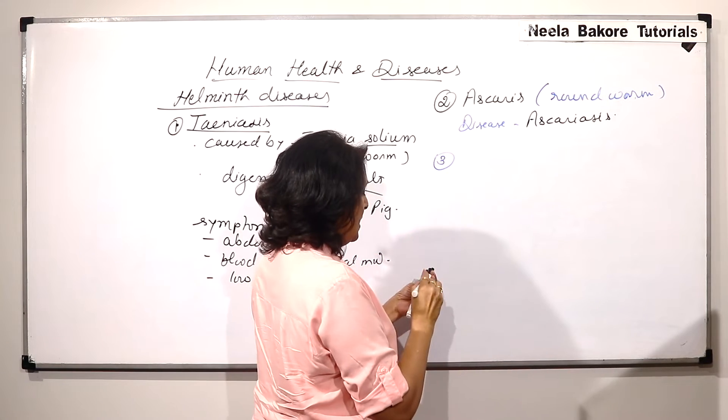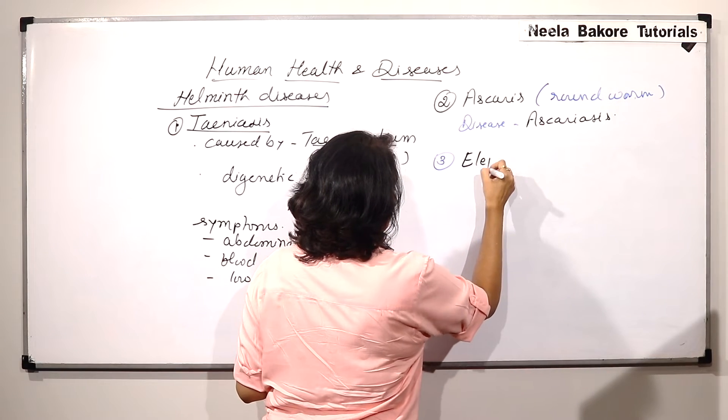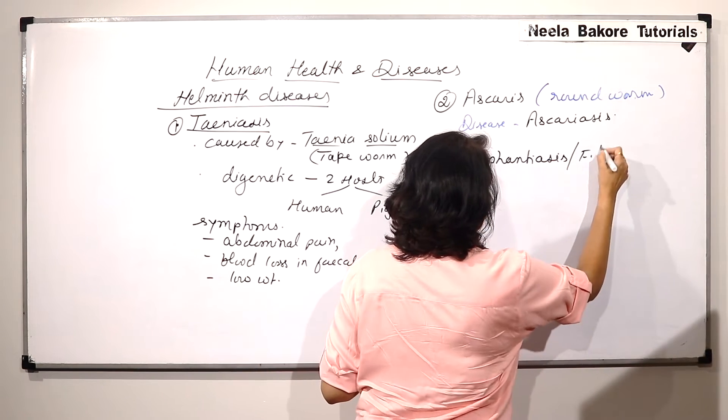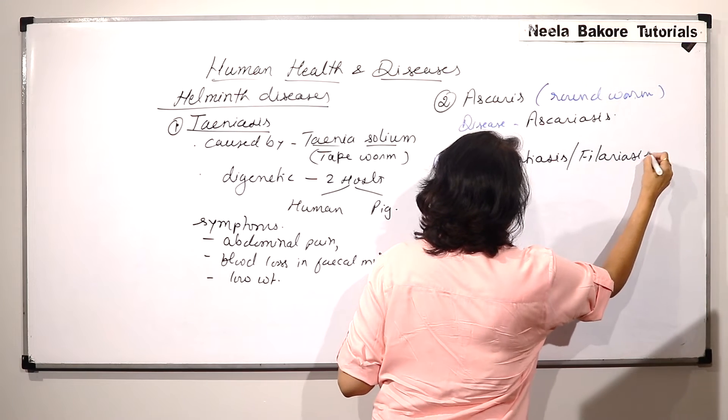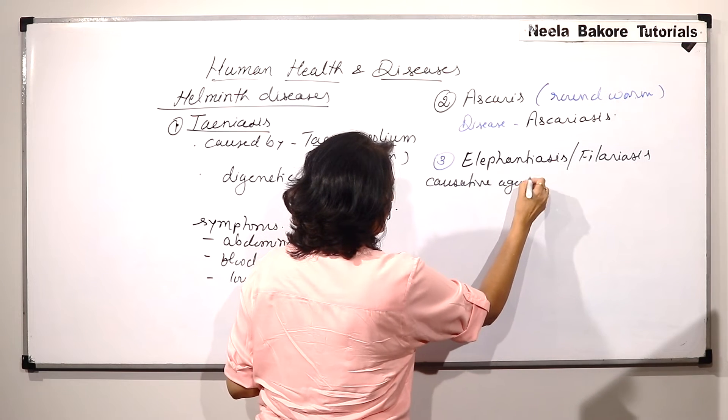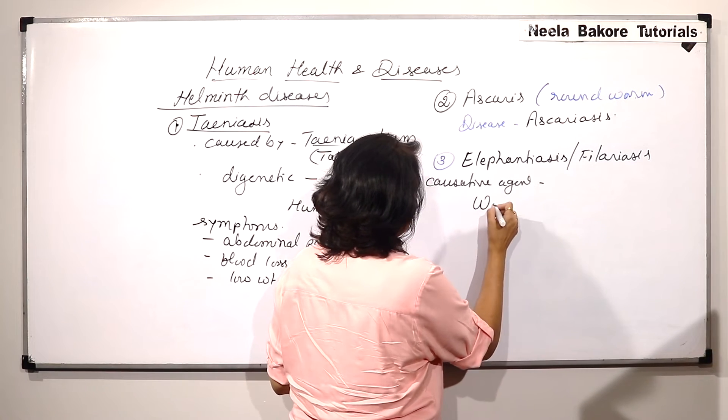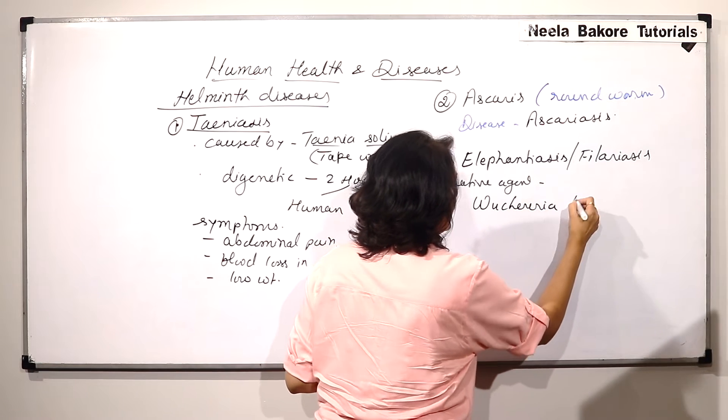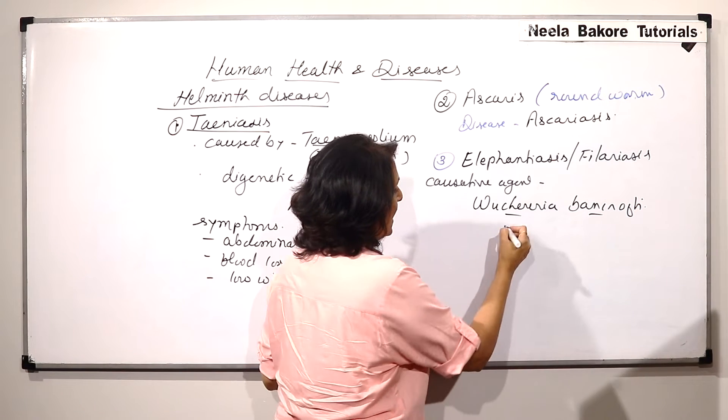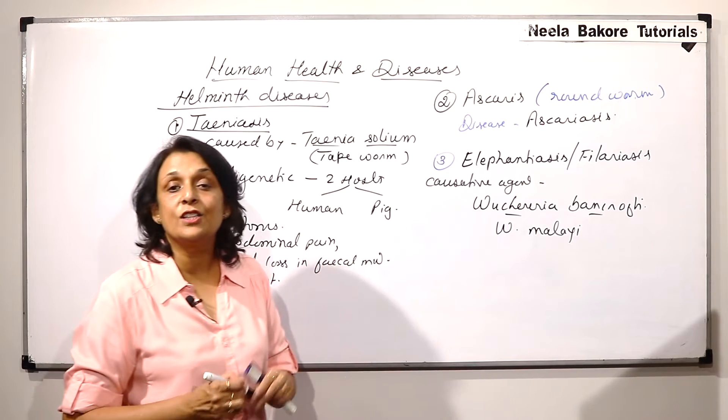And the third pathogen is commonly known as Filaria worm and the disease caused is Elephantiasis. It is also known as Filariasis. The causative agent is Filaria worm which is scientifically known as Wuchereria bancrofti. This is one species and other is Wuchereria malayi. This is another species.